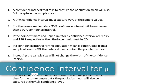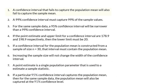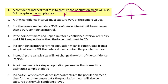In this video, I'm going to go over these statements about the confidence interval for the population mean and determine whether they're true or false. Number 1: A confidence interval that fails to capture the population mean will also fail to capture the sample mean. That statement is false because the confidence interval may or may not contain the population mean, but it will always contain the sample mean because the sample mean is used to construct that interval. So the sample mean will always be within the lower and upper limits.